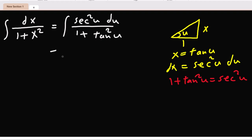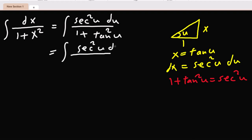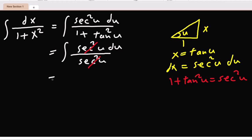So it becomes integration of sec squared du over sec squared u. Now, sec squared cancel sec squared, remains only integration of du.